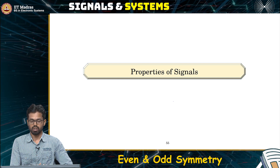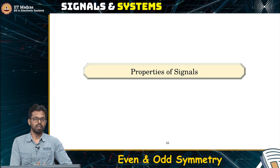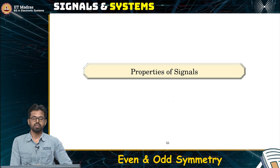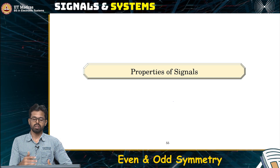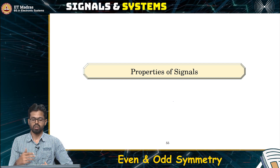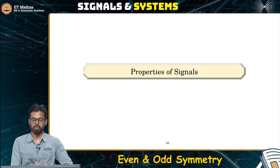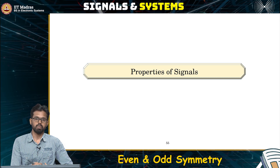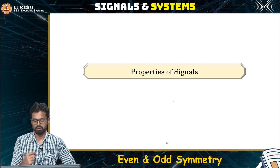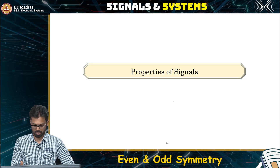We saw that a complex-valued signal, specifically the phasor, helps us do a lot of analysis in circuits. Now we will see more properties about these signals and how these properties are useful for analyzing what is going on in an electronic circuit — for example, if there is a resistor and a capacitor, how to analyze the signals passing through it. When we know the properties of these signals, the analysis becomes much simpler.